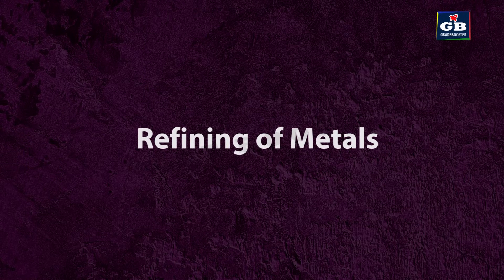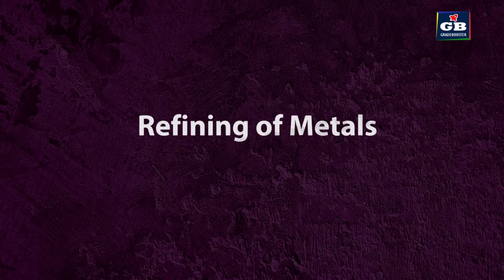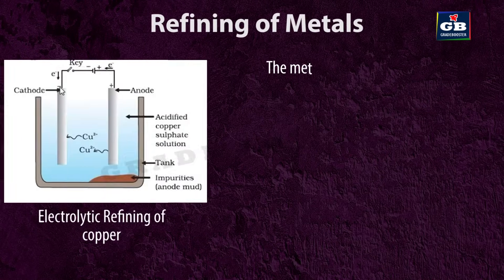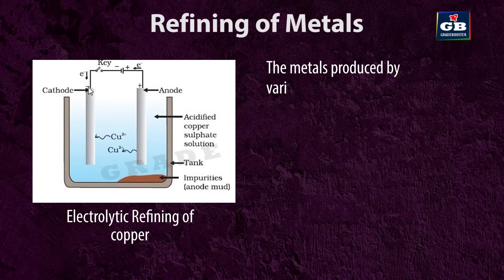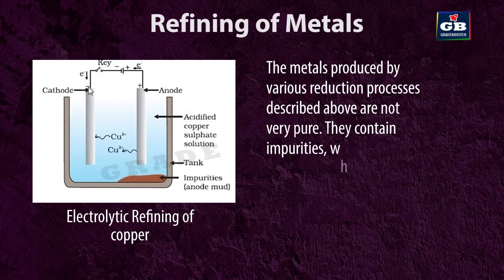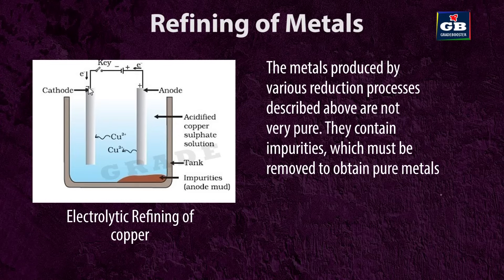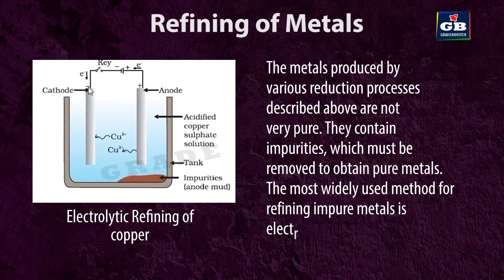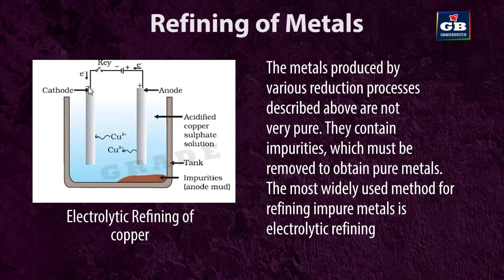Refining of metals. The metals produced by various reduction processes are not very pure — they contain impurities which must be removed to obtain pure metals. The most widely used method for refining impure metals is electrolytic refining.